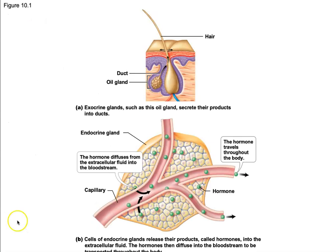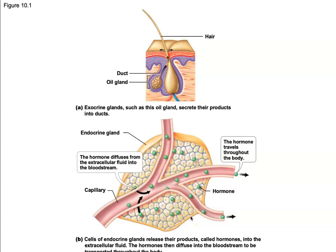Here's an example illustrating the difference. An exocrine gland, like an oil gland, secretes a product into a duct, and the duct leads to the outside of the body. Endocrine glands, on the other hand, secrete hormone proteins — hormones can be proteins or lipid-based steroids — into the interstitial fluid, which then diffuse into the bloodstream and travel throughout the body.